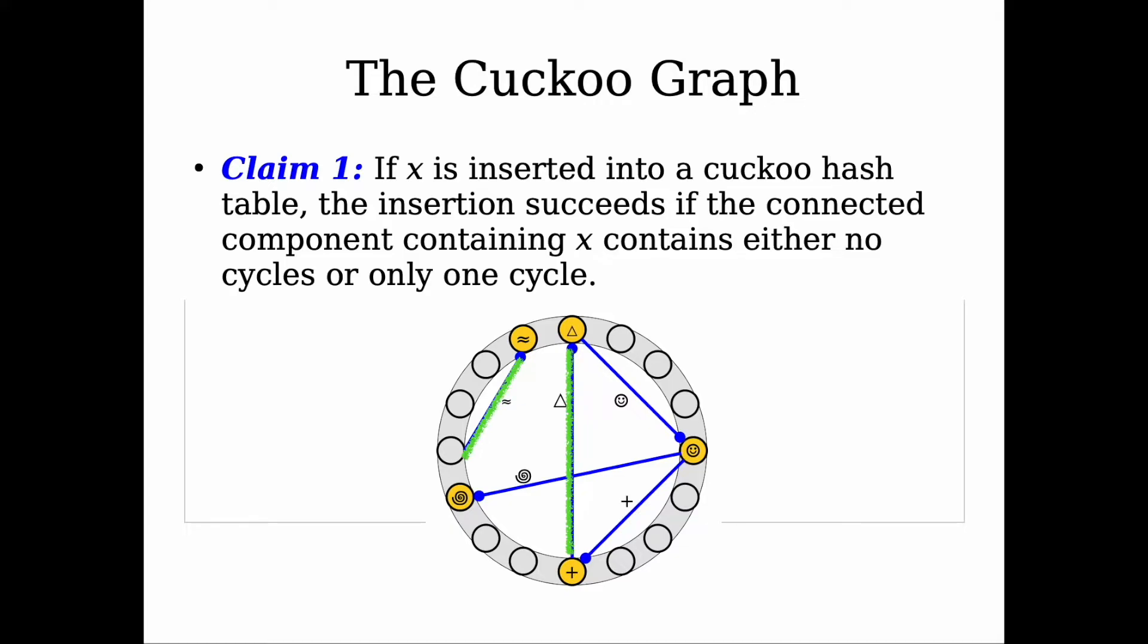So whenever we insert an element in our table, we identify if the particular edge we will add to the cuckoo graph will be part of one connected component with a certain property, and that property is it should have no cycle or only one cycle.